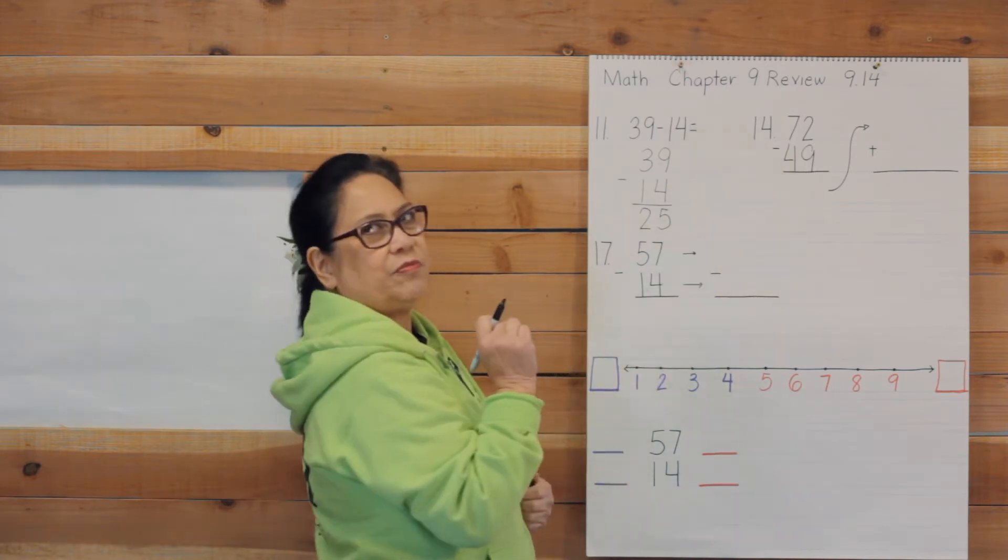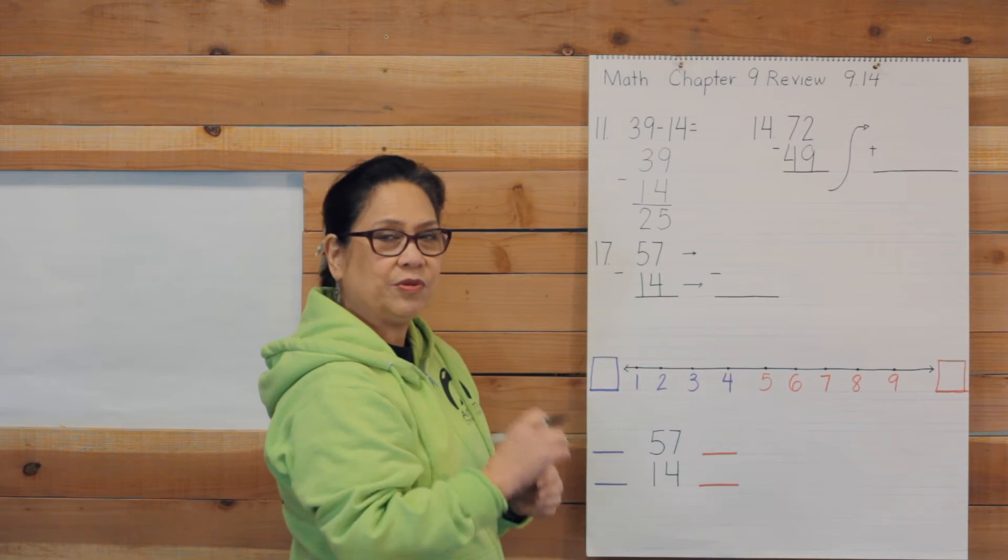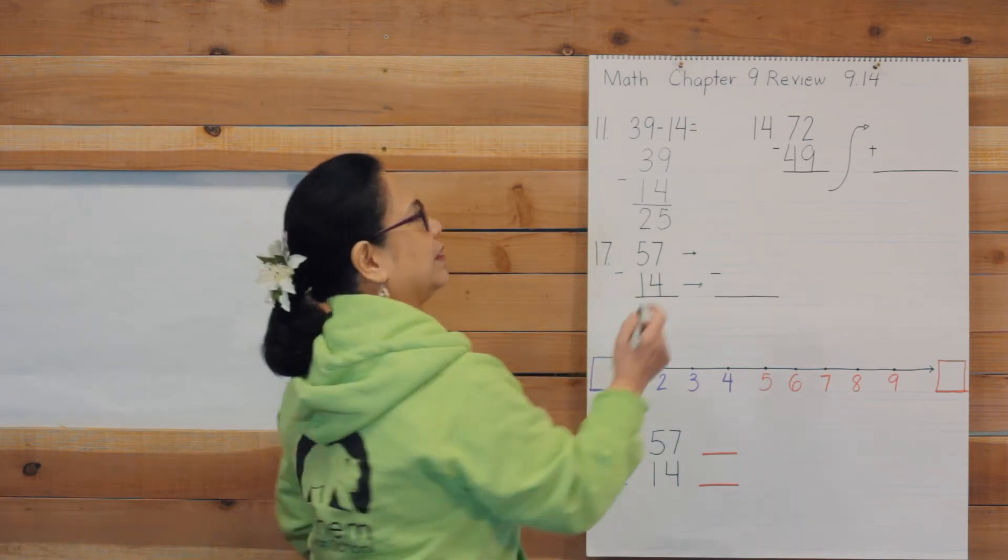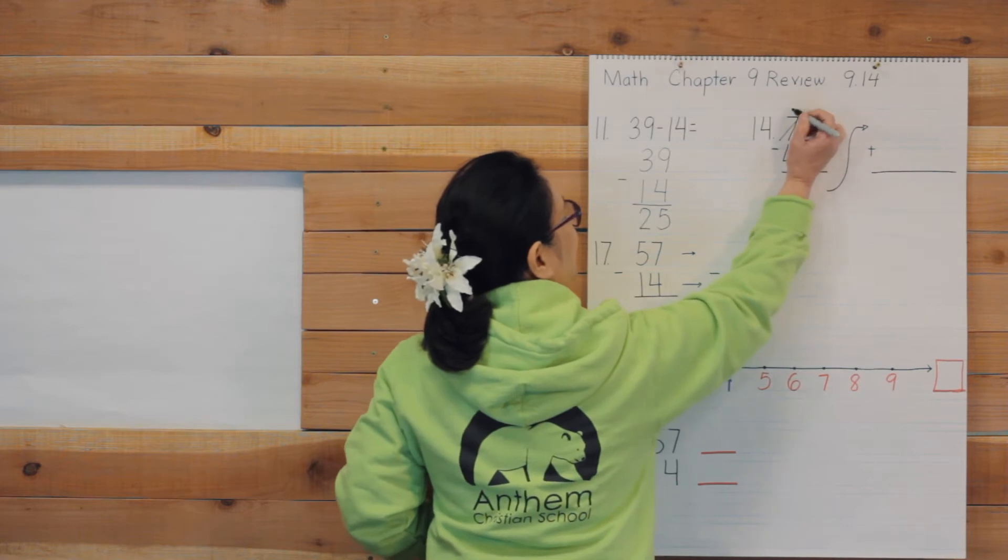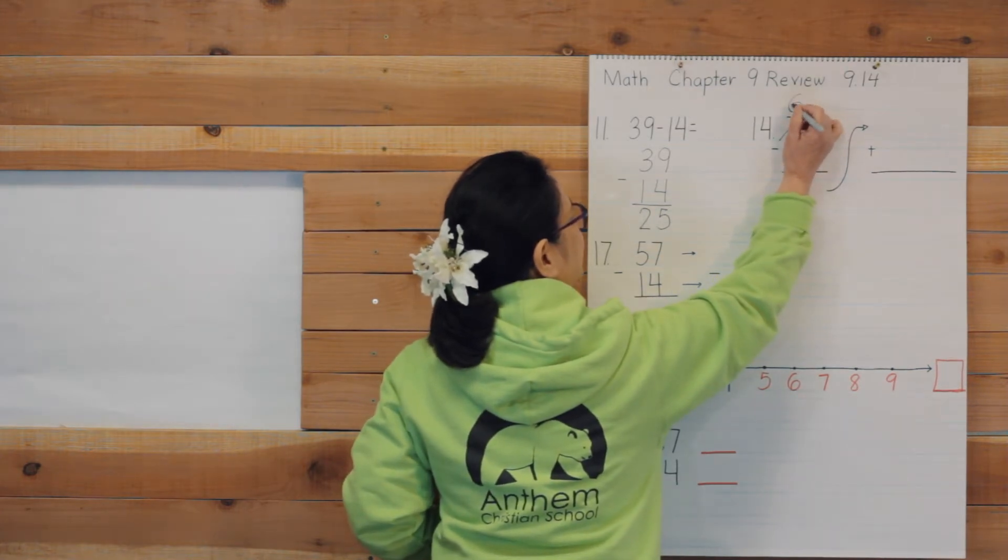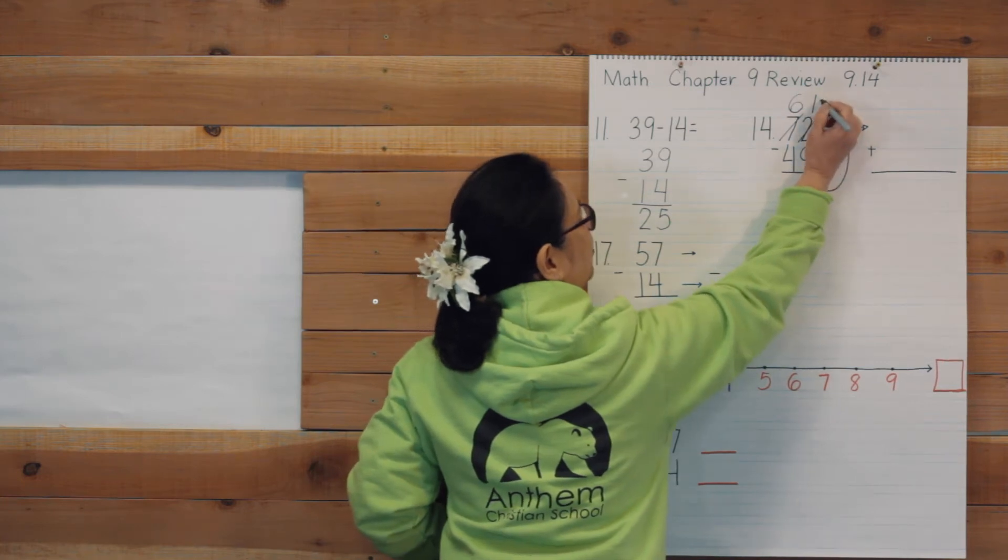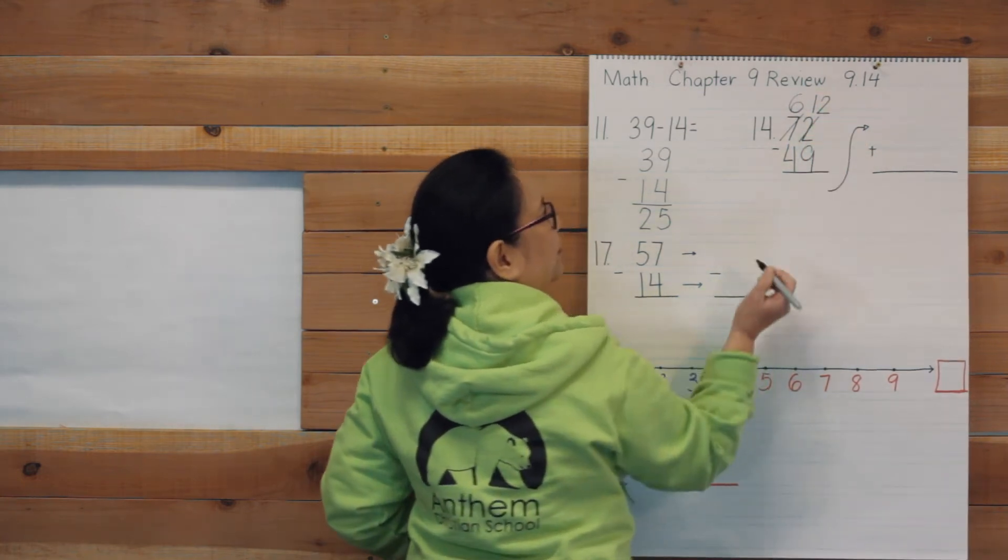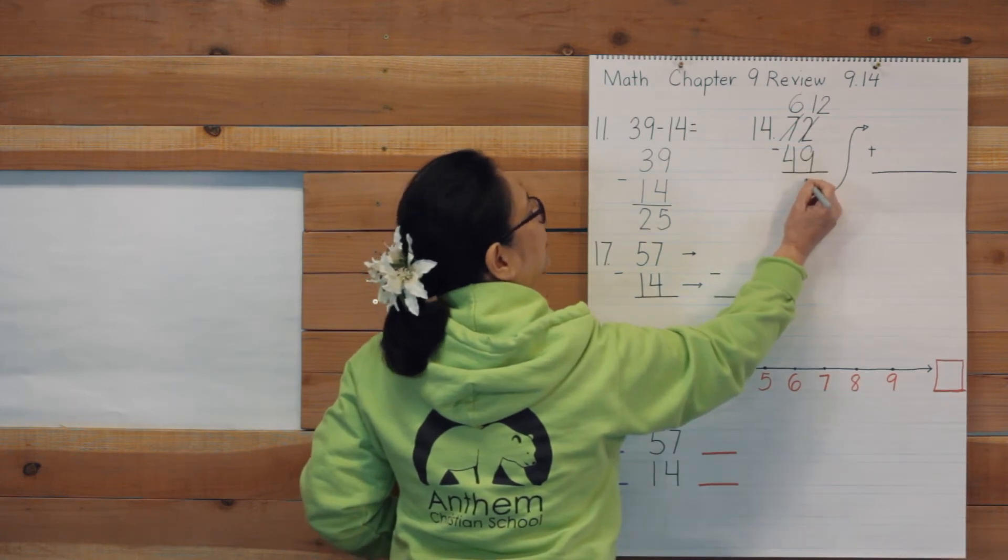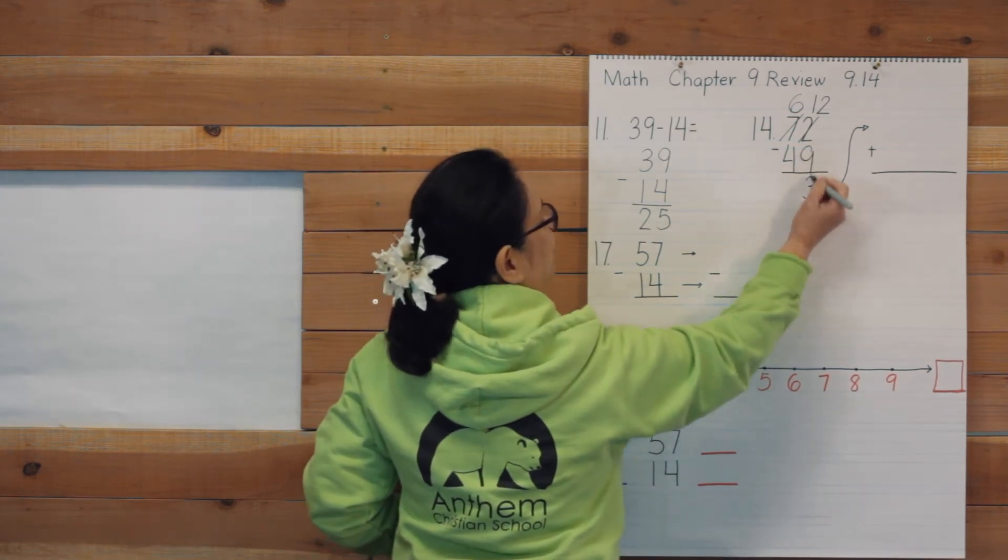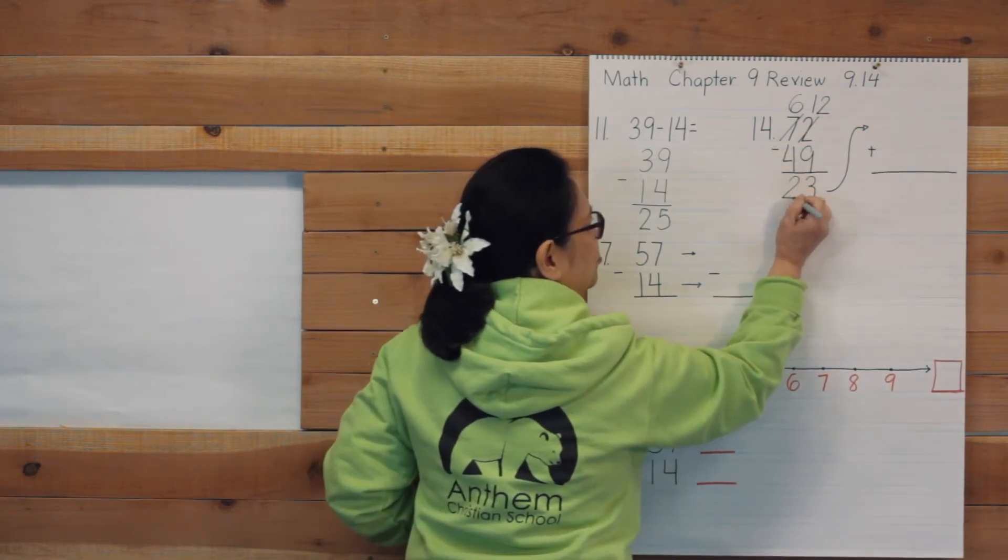Number 14. Can we do 2 take away 9? No, we can't. So we have to regroup. Go ahead and regroup. We will take a 10 out of the 7, so that makes it 6. We'll put the 10 here, plus the 2 that's already there, that makes it 12. 12 take away 9 is 3. 6 take away 4 is 2.